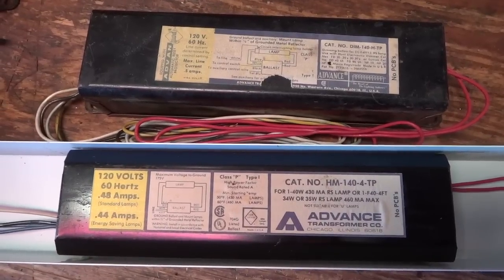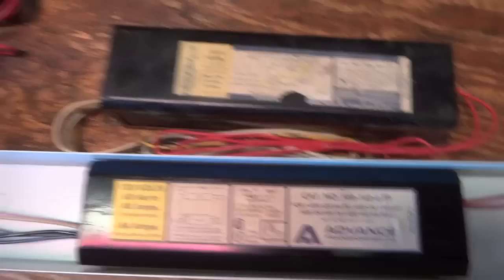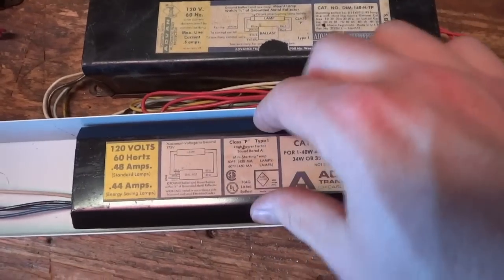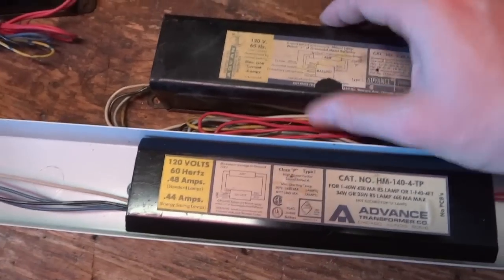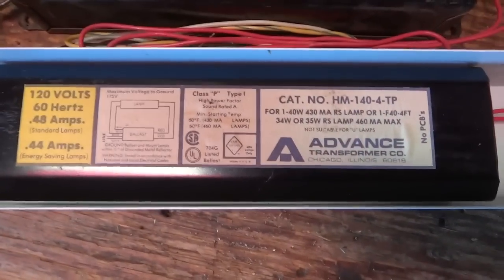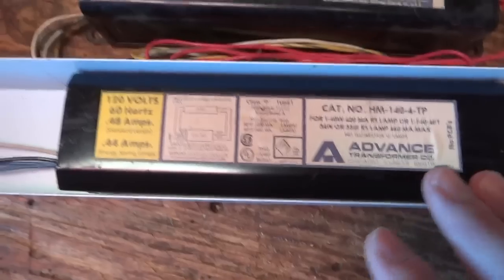So after opening the fixture up, you can see the ballast inside. It's a high power factor advanced ballast, and it's the same size as the dimming ballast. You can see it's a slightly different design case with the slanted sides here versus the rounded ones. But this obviously does the energy saving lamps, and this can only do a 40 watt lamp, which is understandable. So this ballast is original to this fixture, and I guess what we will go ahead and do is take these sockets out and install this ballast.